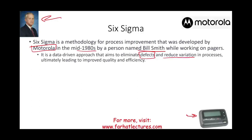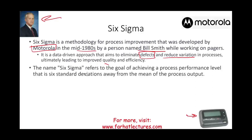The goal is to reduce variation in processes, which ultimately leads to improved quality and efficiency. The name Six Sigma refers to the goal of achieving a process performance level that is six standard deviations away from the mean of the process output. Simply put, you want to produce as many units as possible while almost eliminating defects — you have to be six standard deviations from the mean.